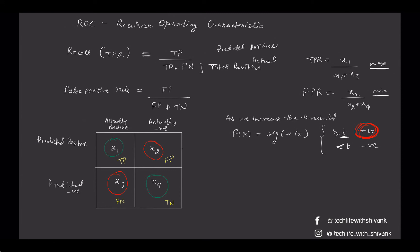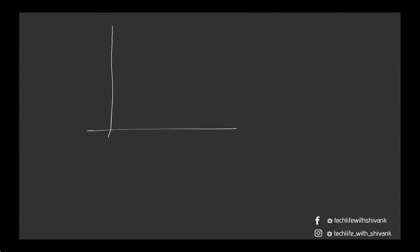On the x-axis we have the threshold, the red curve denotes False Positive Rate, and the blue curve denotes True Positive Rate. We will choose a threshold where True Positive Rate is higher and False Positive Rate is lower — a point where false positive rate is quite low and true positive rate is quite high. That threshold defines our logistic regression classifier.